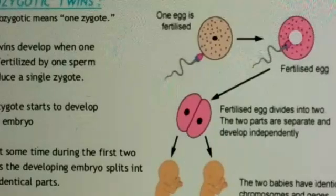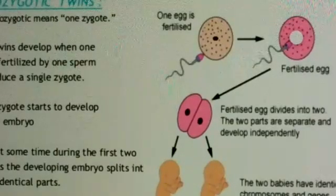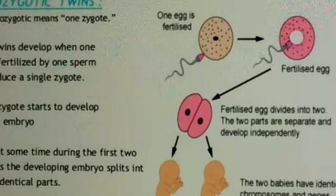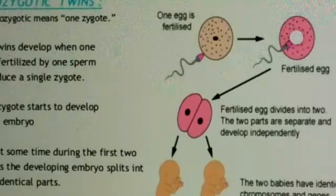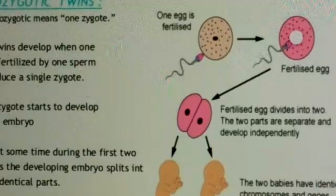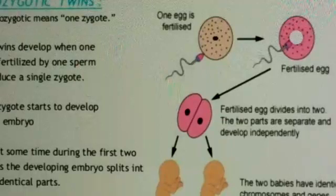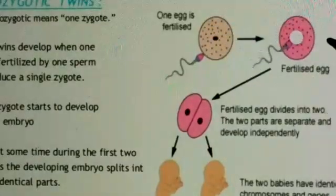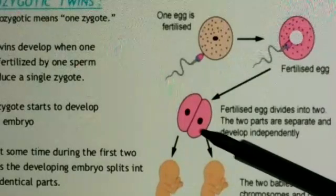Now we will talk about twins. You may have seen twins in your surroundings who are very similar and difficult to identify. There are two types of twins: monozygotic twins and dizygotic twins. In monozygotic twins, development happens from a single zygote — one sperm fertilizes one egg and a single zygote is formed. As seen in the figure, the fertilized egg starts developing.